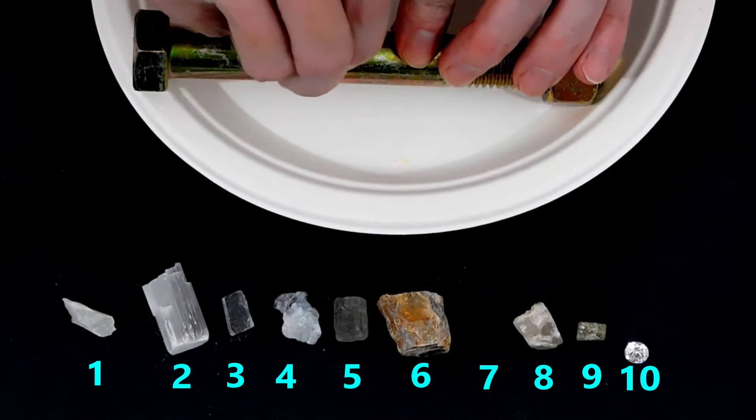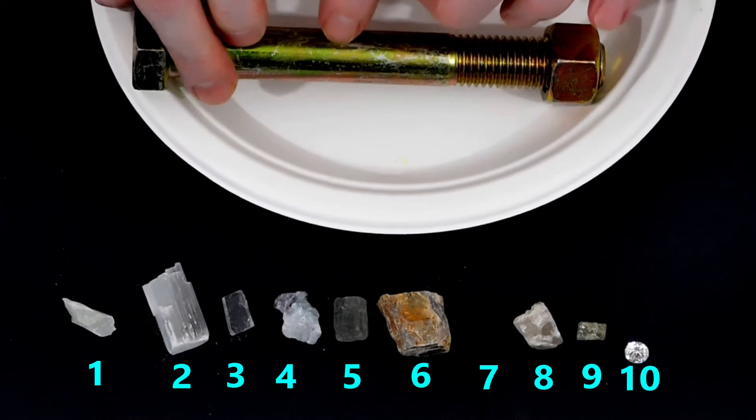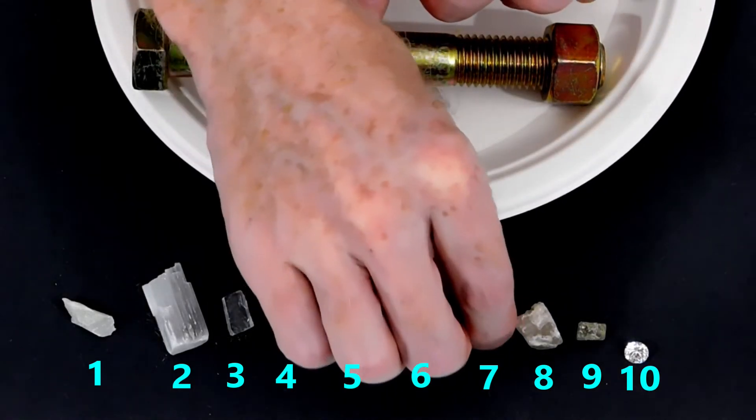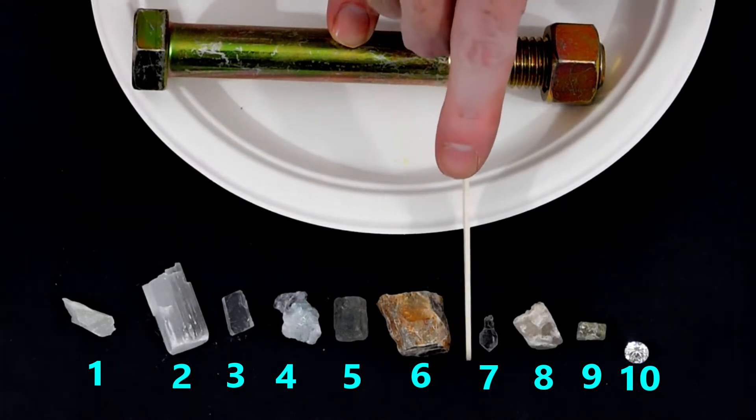We continue to go up the scale and now try quartz. This time, we see and feel a scratch, which tells us the quartz is harder than the bolt. That means the Mohs hardness scale value for the bolt is between a 6 and a 7.